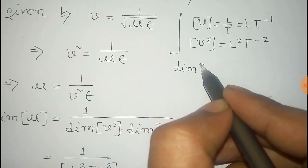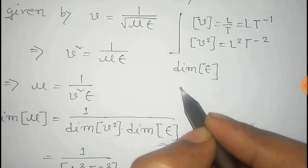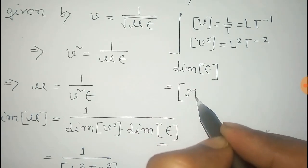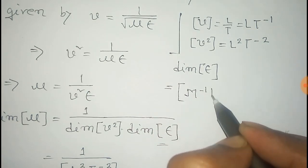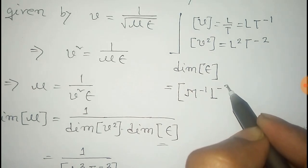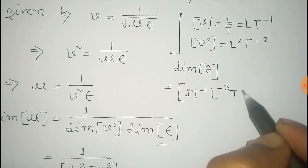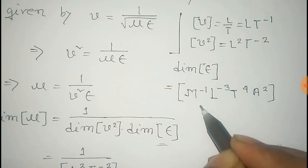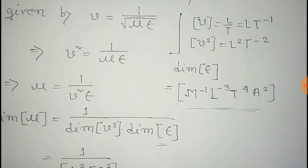And we have found there, that dimension of permittivity or epsilon is given by M to the power minus 1 into L to the power minus 3 into T to the power 4 into A square. That is the dimension of permittivity.